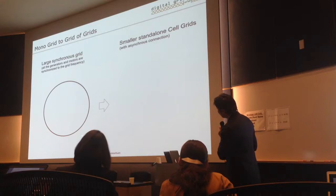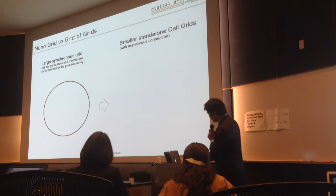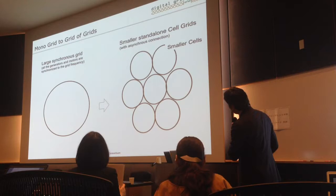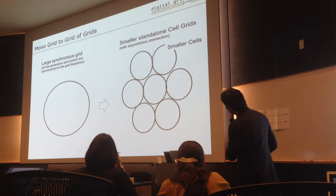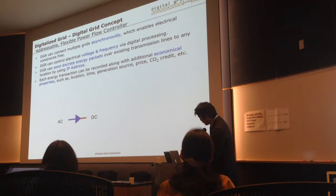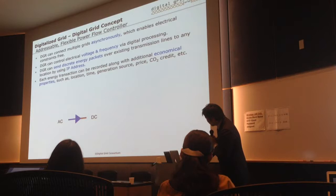From monogrid to a grid of grids: the large synchronous grid has all generators and motors synchronized to the grid frequency — this is the conventional grid. The digitalized grid would consist of smaller standalone cell grids, where synchronicity is local within each small grid cell. In other words, this is a normal AC grid, and AC-DC conversion is already installed in the conventional grid.